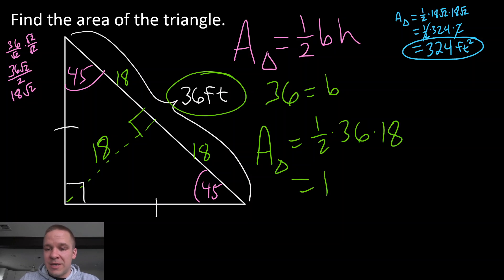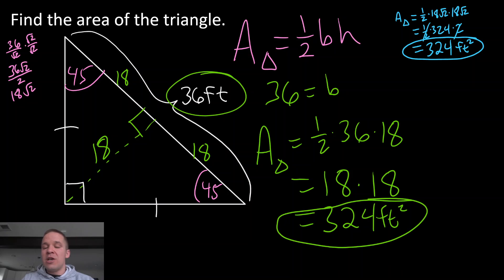So one half of 36 is gonna be 18, and as we already know from the previous problem, 18 times 18 is 324 feet squared. So either way you slice it here, we're still using our 45, 45, 90 triangle, we're just using them in a different way. I dropped an altitude, kind of dropped an altitude, right? Going up there as my height, I split that base up, used the 45, 45, 90 triangle there. Either way is awesome.